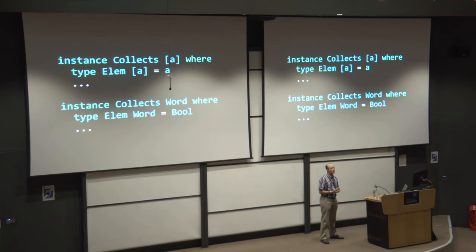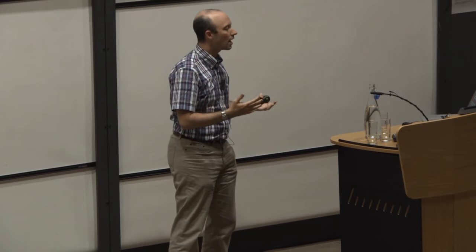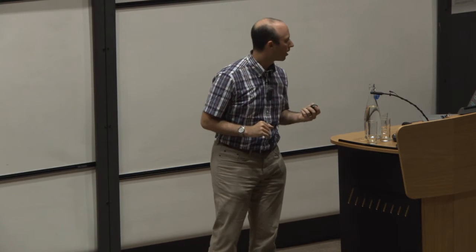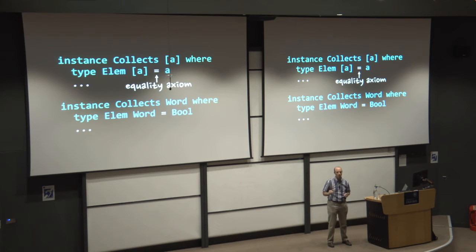So these might be two instances of this class. So a list of A is a collection, and its element type is A. We could think of a word as a bit string, and its element type can be bool. So it doesn't just have to sort of unpack something, but these are two examples. Now here, when I say that type Elm list of A equals A, that's introducing a new equality axiom into Haskell. So now every time I say Elm list of A, that's identical to A, as far as the Haskell type checker is concerned.